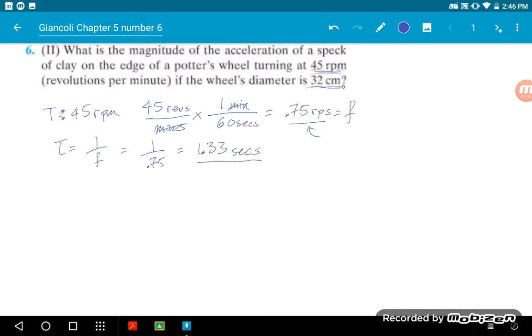On top of that, it also gives us 32 centimeters as a diameter. So if 32 centimeters is a diameter, then that means the radius is half of that. So that's going to be 16 centimeters. We know that this needs to be in meters, so it's going to be 0.16 meters.